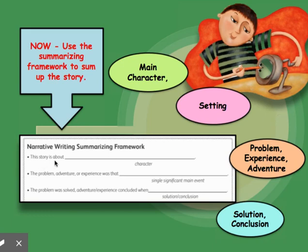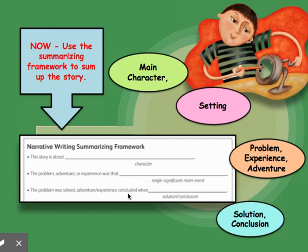This story is about who — that's the character. The experience, adventure, or problem was that single significant main event, the most important thing that happened in the story. The problem was solved, or the adventure concluded, when — what was the solution or the conclusion?